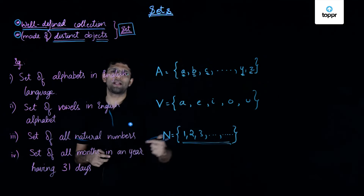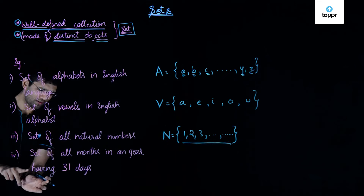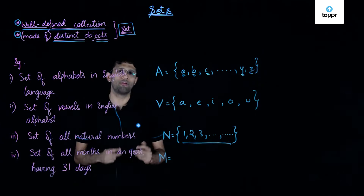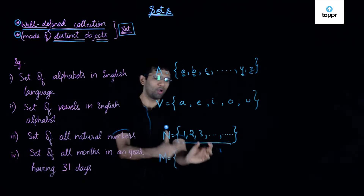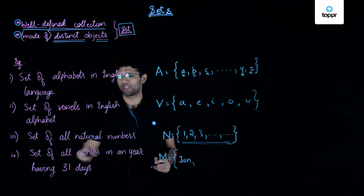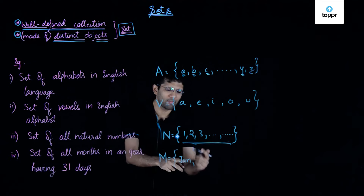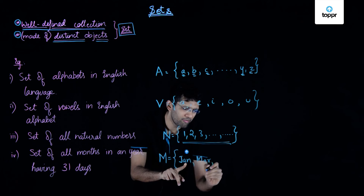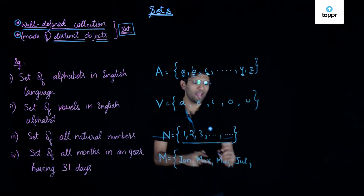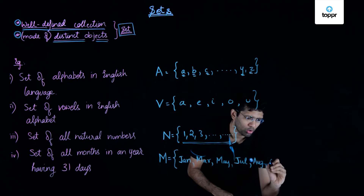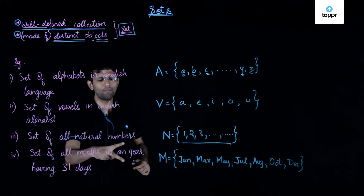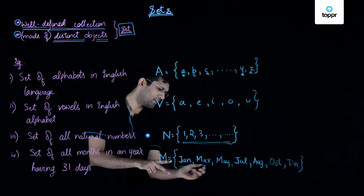We have now seen three examples of sets. One final example of a set can be the set of all months in a year having 31 days. We will denote this set by capital letter M. Writing all the months that have 31 days, we start with January, followed by March, then May, then July, then August, then October, and finally December. So we wrote all the months which had 31 days.